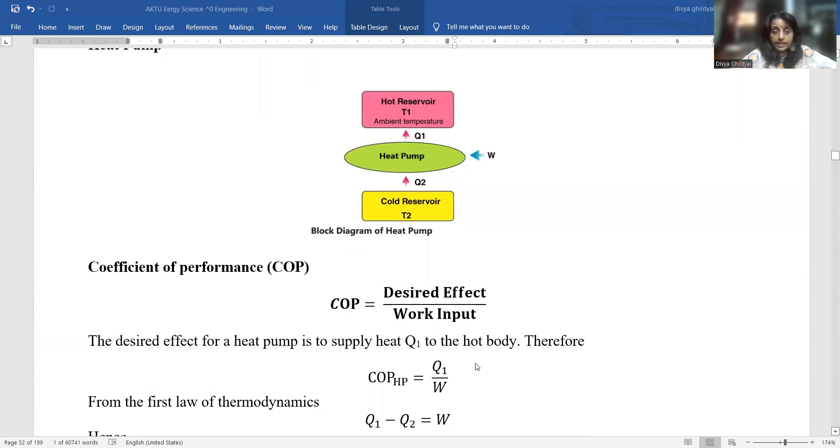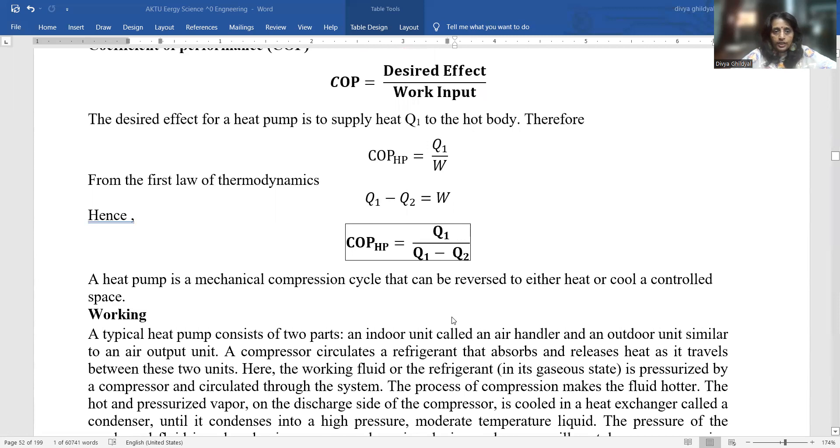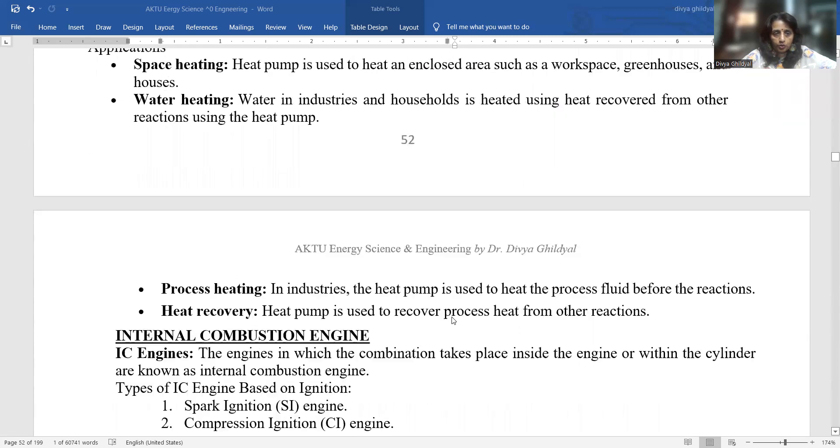For a heat pump, the coefficient of performance is again the desired effect divided by work input. A heat pump is a mechanical compression cycle that can be reversed to either heat or cool a controlled space. A typical heat pump consists of an indoor unit called an air handler and an outdoor unit similar to an air output unit.